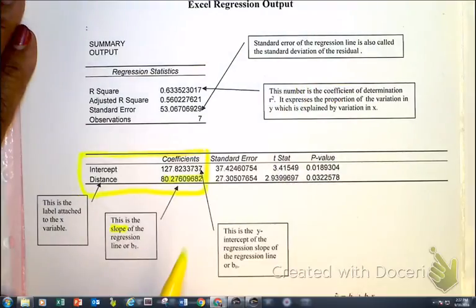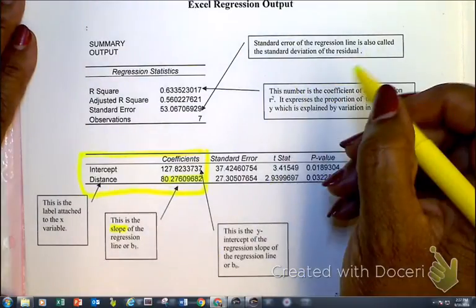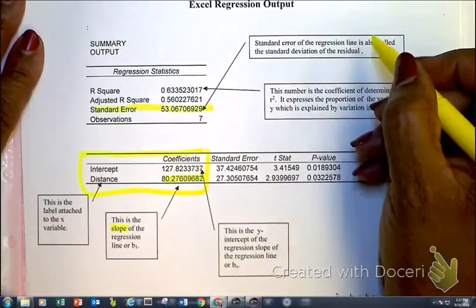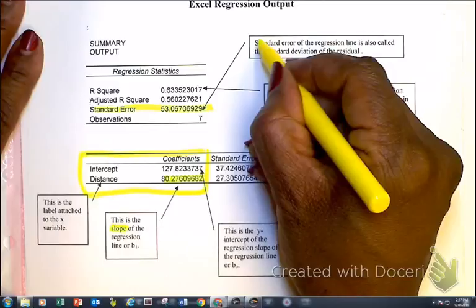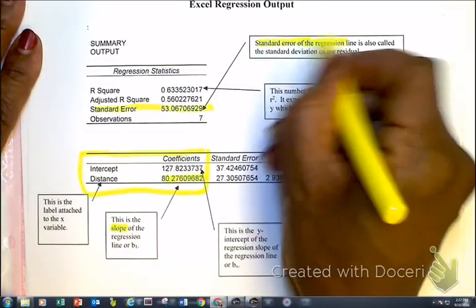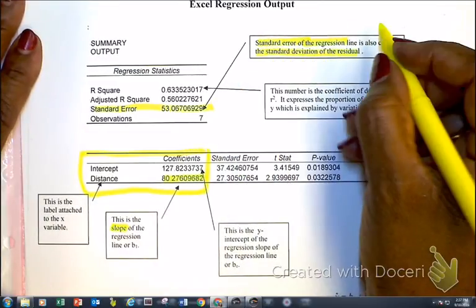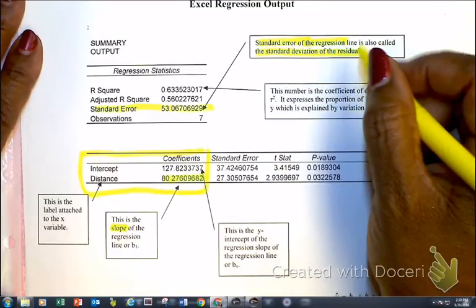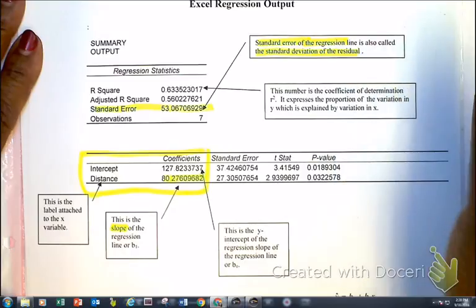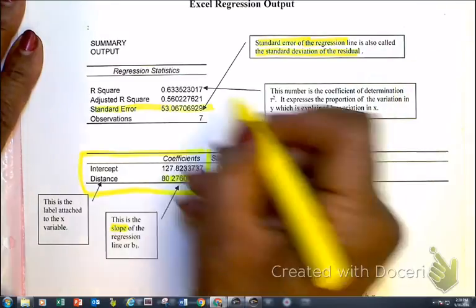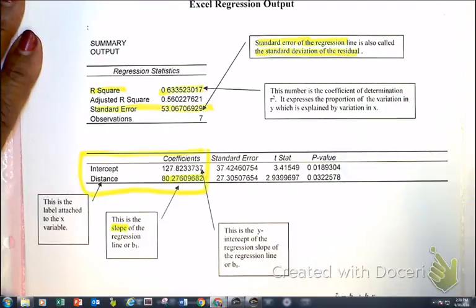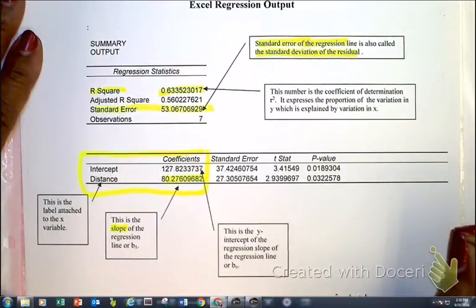Here, this is slightly different. This is your standard error of the regression line right here from Excel. Notice that I also mentioned to you that the standard error of the residual is the same as the standard deviation of the residual is also referred to as the standard error of the regression line. So they go hand in hand. You can see this is obviously R-squared because it has the R-squared there, and it explains what proportion of the variation is explained by the least squares regression line.